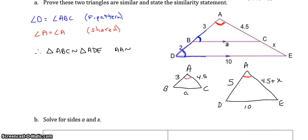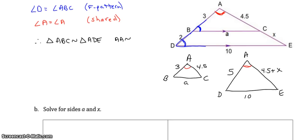Now to solve for sides A and X, let's write out our three ratios. So, AB corresponds with AD, so that's 3 over 5. BC corresponds with DE, so A corresponds with 10, so that's equal to A over 10. And AC corresponds with AE, so 4.5 corresponds with 4.5 plus X.